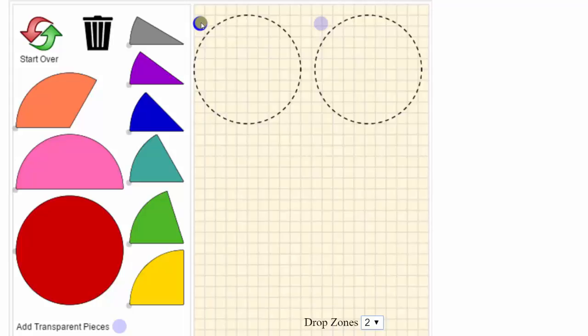To do this, we can click and drag a fraction piece onto the drop zone. It will rotate into position. Or we can just click a particular fraction piece.